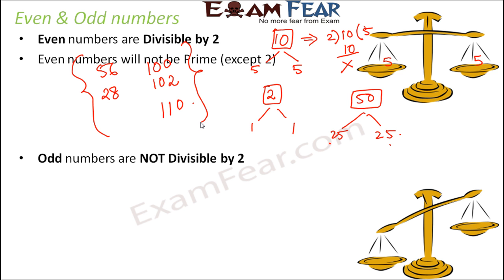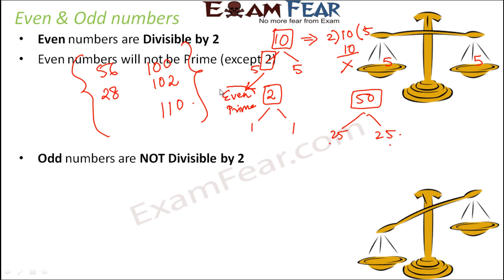The only exception to this is the number 2. The number 2 is the only number which is both a prime number and an even number. So remember: 2 is the only even prime number. Other than that, prime numbers can only be odd numbers.